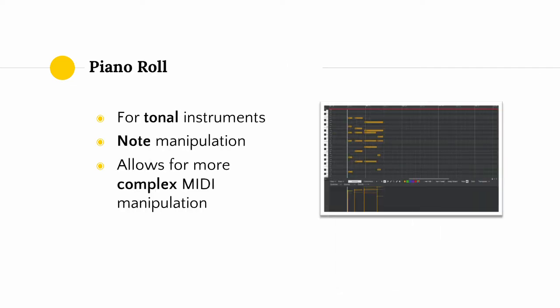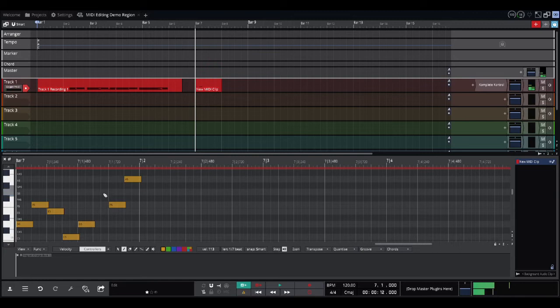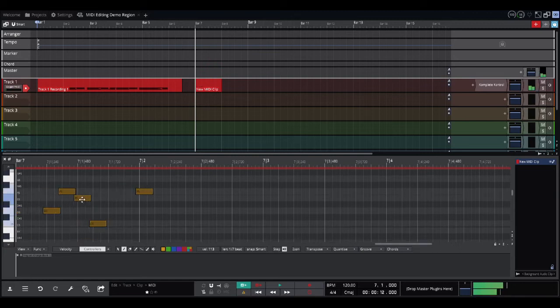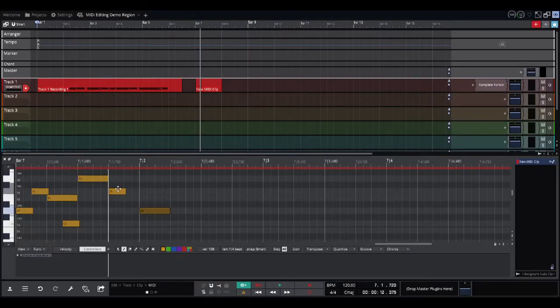One type of MIDI editing is done in a piano roll, analogous to the piano roll used in player pianos. You draw notes on the piano roll, and when you press play in your DAW, the MIDI notes are played out on whatever plugin you have set up to receive them. The piano roll is most useful for tonal instruments where you care about what notes are being played. Most piano rolls give you basic manipulations like adding and deleting notes, moving notes, changing the length of notes, changing the pitch of notes, cutting, copying, and pasting.